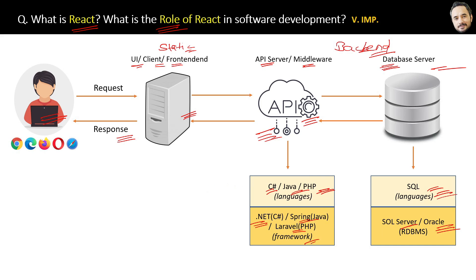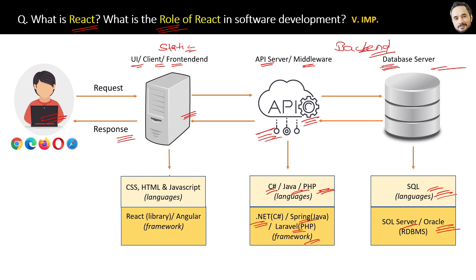Why do we need frameworks? Because frameworks simplify the complex server-side programming operations for big applications. Similarly, for front-end, we need only CSS, HTML, and JavaScript as languages. But to simplify the complex UI, we use React, which is a JavaScript library, or we can use Angular also, which is a complete UI framework.